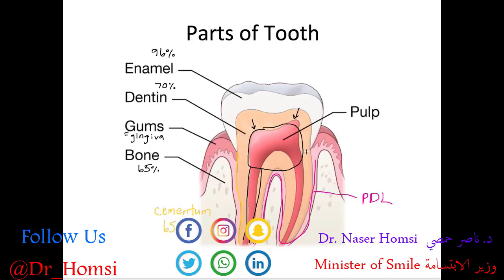One other important structure: the junction between the cementum and the enamel is called the cemento-enamel junction, or CEJ for short. The CEJ is a very important and anatomically reliable landmark. If I draw a dotted line to symbolize the CEJ — the junction between the cementum and the enamel — anything above the CEJ is referred to as the anatomic crown of the tooth.